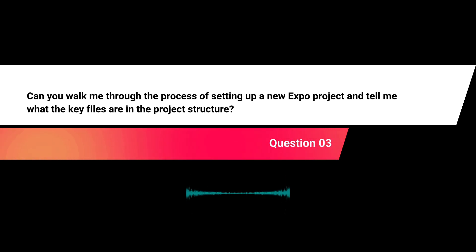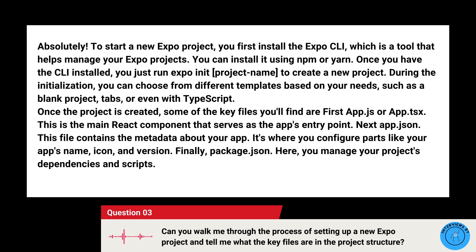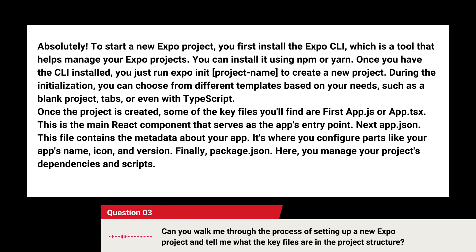Can you walk me through the process of setting up a new Expo project and tell me what the key files are in the project structure? To start a new Expo project, you first install the Expo CLI, a tool that helps manage your Expo projects, using NPM or Yarn. Once you have the CLI installed, you run expo init project-name to create a new project. During initialization, you can choose from different templates based on your needs, such as a blank project, tabs, or even with TypeScript.